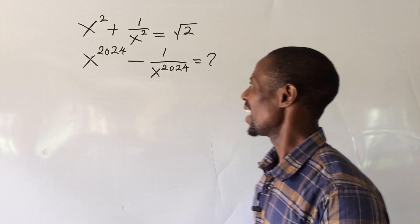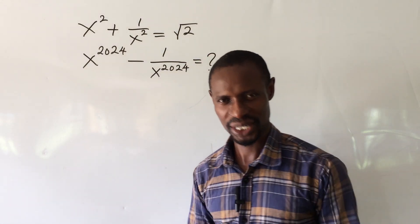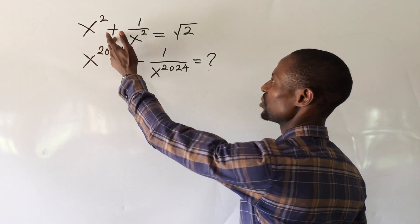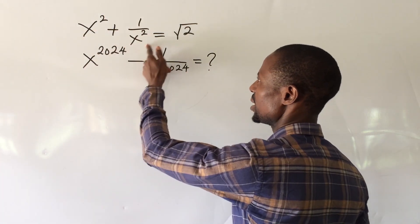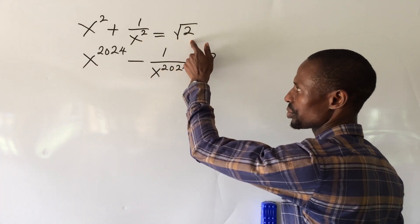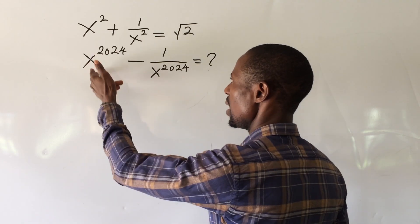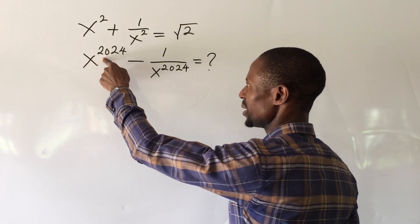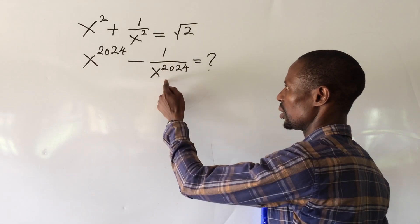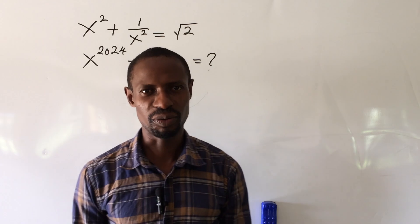Here we have an only paid challenge. The question reads: x to the power of 2 plus 1, all over x to the power of 2, equal to root 2. What will be the value of x to the power of 2024 minus 1, all over x to the power of 2024?